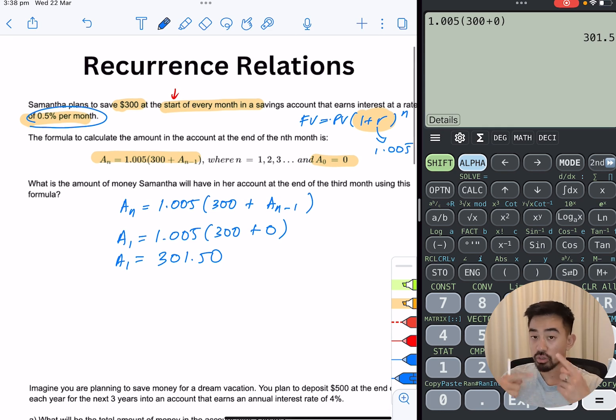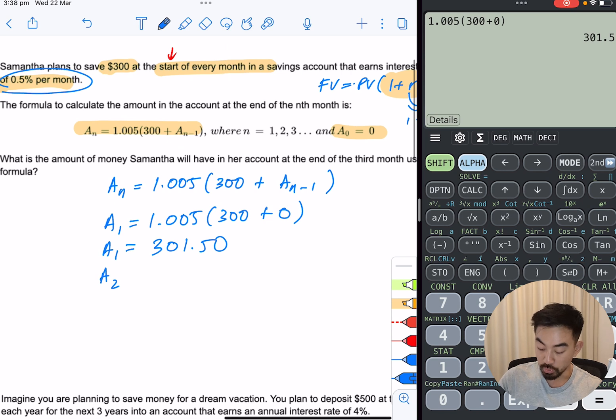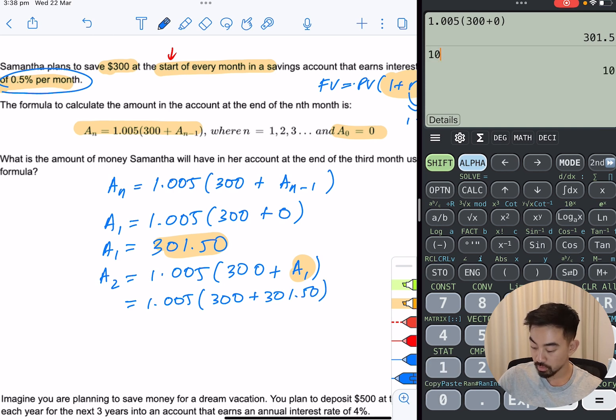Now, remember, you're just looking for patterns. So for the second month, we're using the same formula, it's going to be 1.005 times (300 plus the previous month, which is A1). Well, we just worked out what A1 was, didn't we? It's $301.50. So you just sub it in. 1.005 times (300 plus $301.50). Put in the calculator. And now you have A2, which is 604.5075. So I'll round at the end.